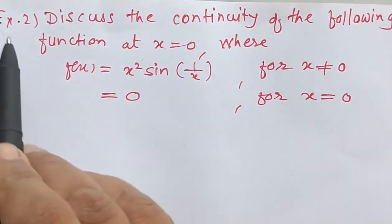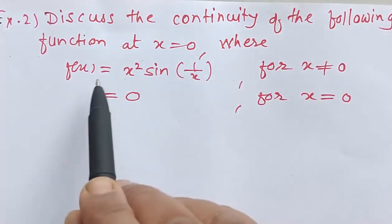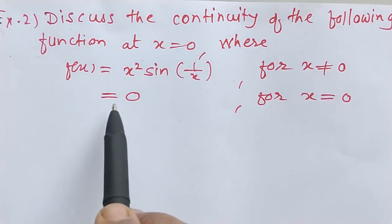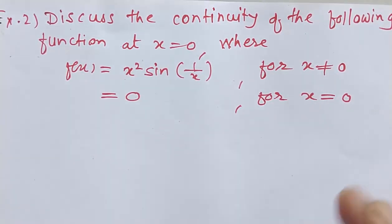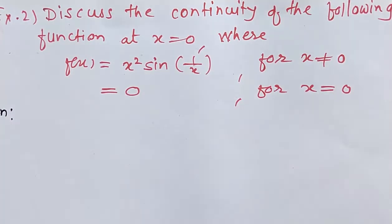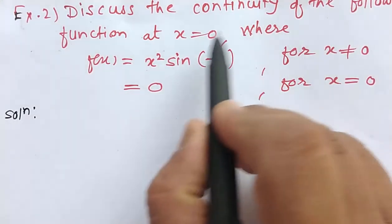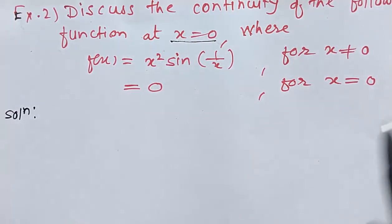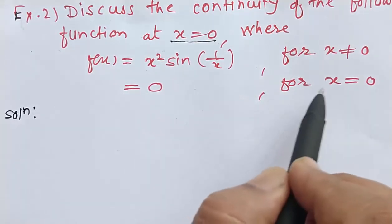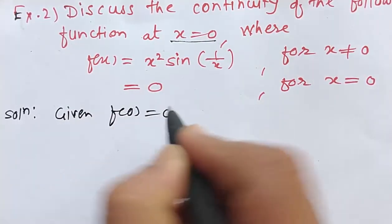Example number 2. Discuss the continuity of the following function at x equal to 0, where f(x) equals x squared sin(1/x) for x not equal to 0, and f(0) equals 0.